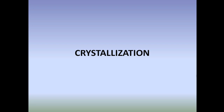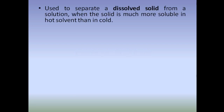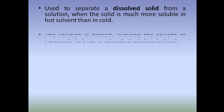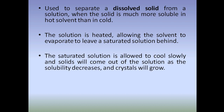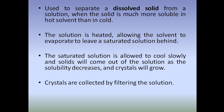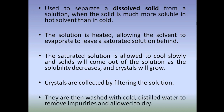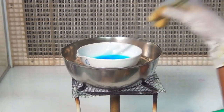Next method is crystallization. Crystallization is used to separate a dissolved solid from a solution when the solid is much more soluble in hot solvent than in cold. The solution is heated, allowing the solvent to evaporate to leave a saturated solution behind. The saturated solution is allowed to cool slowly, and solids come out of solution as solubility decreases and crystals grow. Crystals are collected by filtering, then washed with cold distilled water to remove impurities, and allowed to dry.